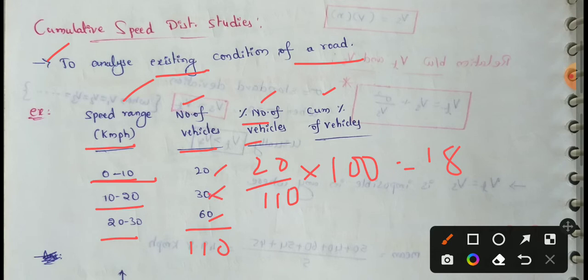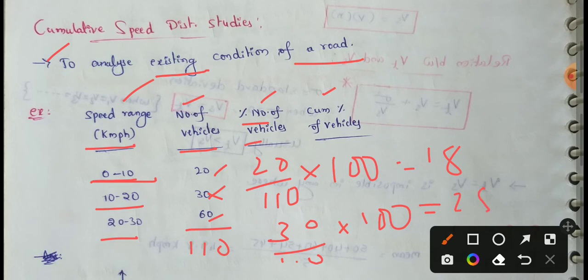The second speed range has 30 vehicles. So 30 divided by 110 into 100 gives approximately 27%. The third step: 60 divided by 110 into 100 gives the remaining percentage. Next, we measure the cumulative percentage of vehicles.